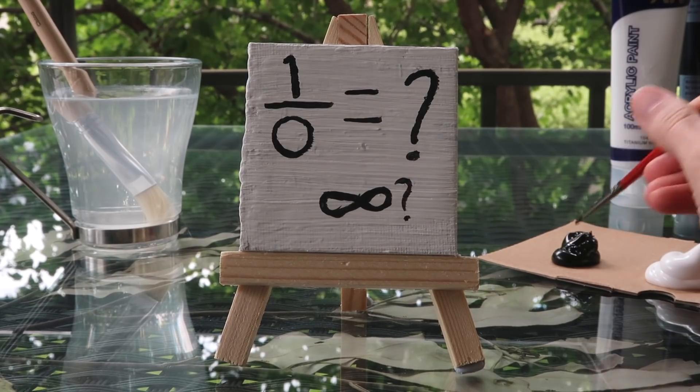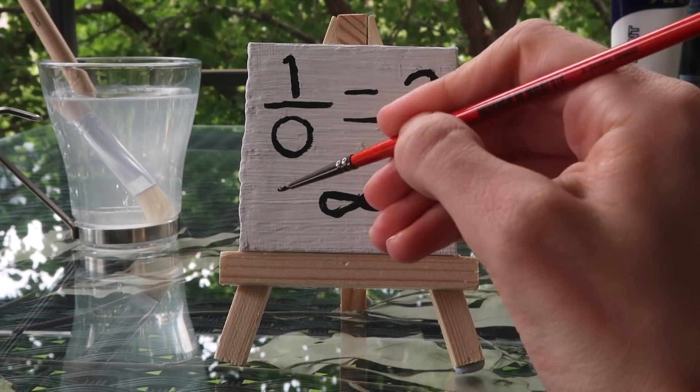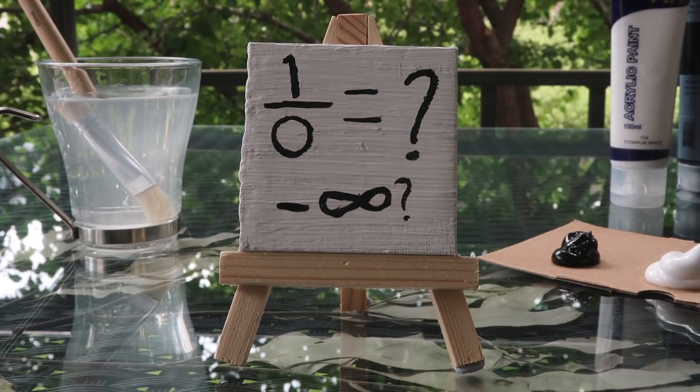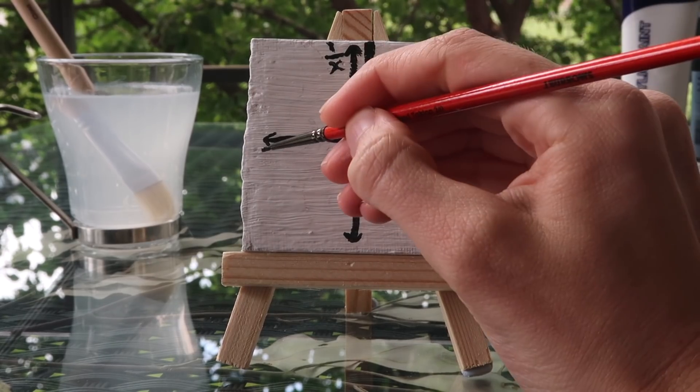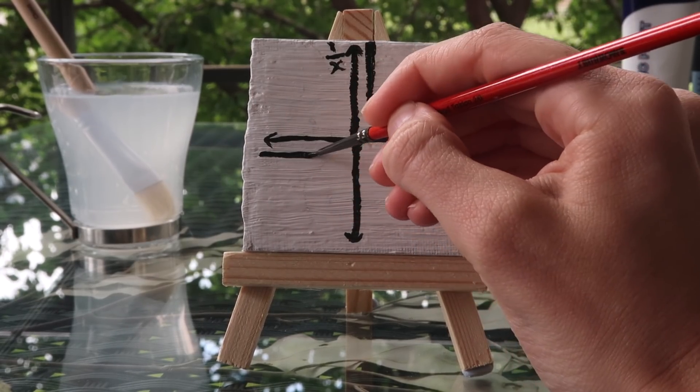So now 1 divided by 0 looks like it might be minus infinity. As our number on the bottom gets bigger, our fraction shoots down to huge negative numbers.